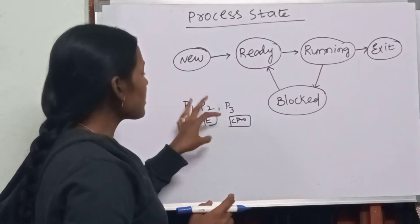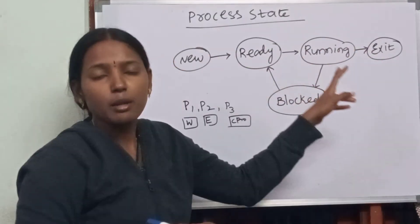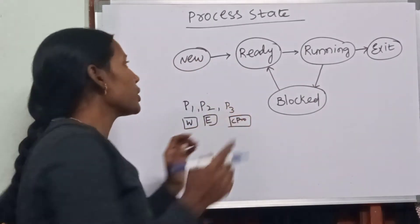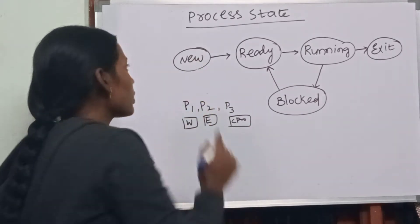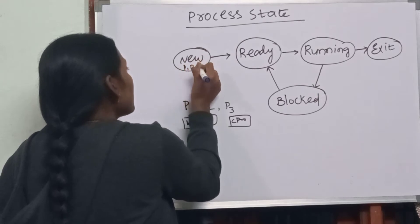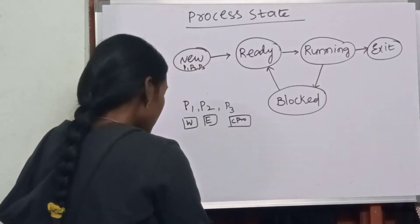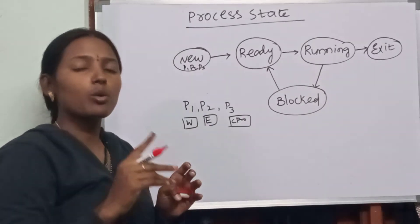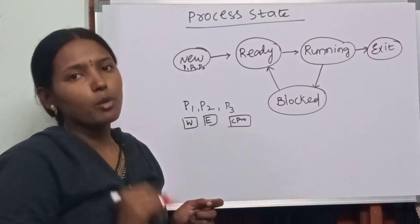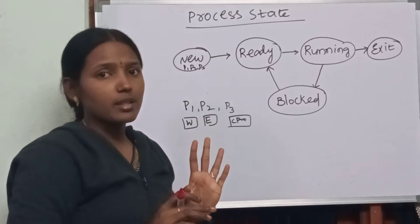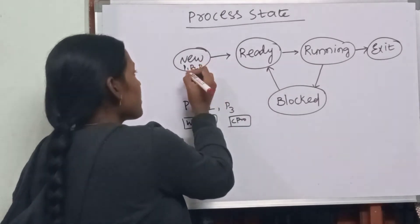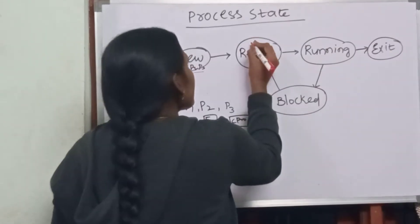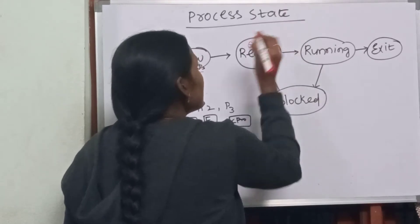Each and every process must go through all these states. First, whichever process we start will enter into the new state. P1, P2, and P3 are started at the same time, but the CPU will execute only one process at a time because we are considering a single system. From the new state, P1, P2, and P3 will go to the ready state. The ready state is a queue — we can also call it the ready queue.